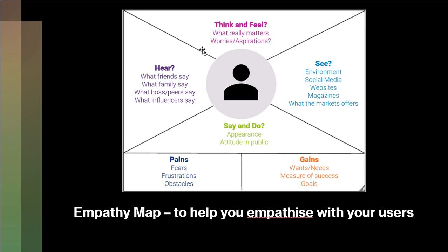Think and Feel means what really matters to your users — what do they worry about, what are their aspirations. What they See maybe comes from the environment, social media, websites, magazines, and what the market has already offered to them. What they Hear may come from friends, family members, boss, peers, and also influencers.